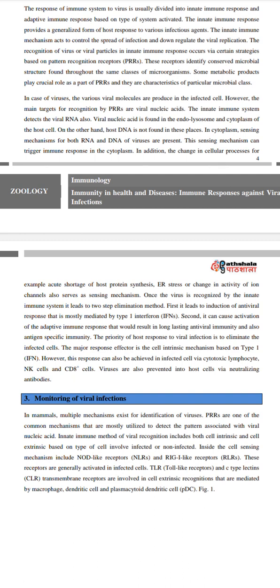For monitoring viral infections in mammals, multiple mechanisms exist for identification of viruses. PRRs are one of the common mechanisms utilized to detect patterns associated with viral nucleic acid. Innate immune methods of viral recognition include both cell intrinsic and cell extrinsic mechanisms. Inside the cell, sensing mechanisms include NOD-like receptors, RIG-1-like receptors; these are generally activated in infected cells. TLRs and C-type lectins are involved in cell extrinsic recognition mediated by macrophages, dendritic cells, and plasmacytoid dendritic cells.